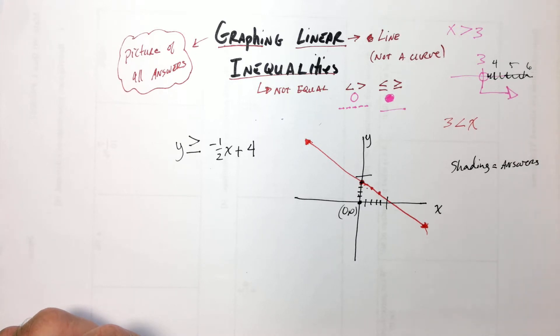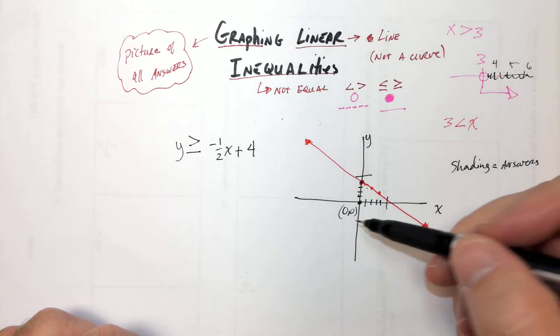In England, they do it the other way. In England, the shading is the not answers. It's weird. It doesn't make sense to me. So how will you know? Well, that's the thing. We just pick a number, and you plug it in.